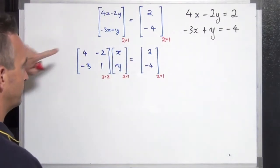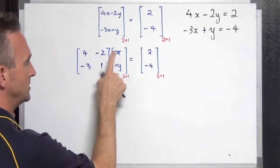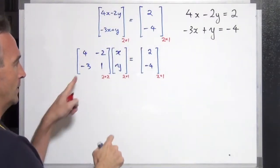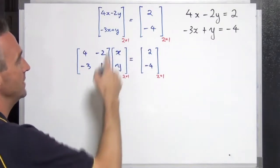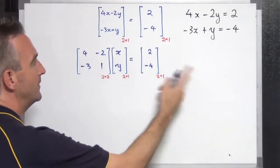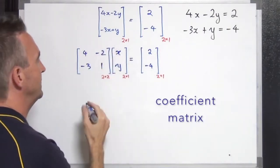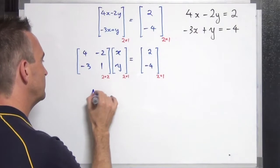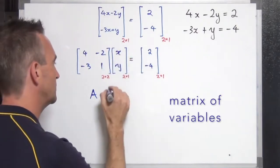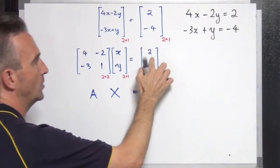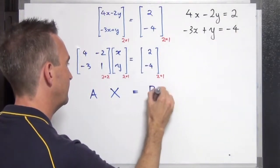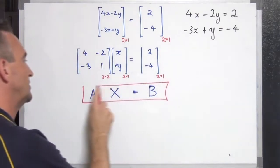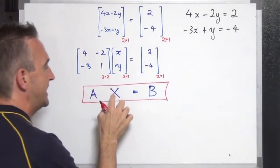Let me explain this matrix multiplication. This times this: 4x minus 2y gives 4x minus 2y. And the bottom row: negative 3 times x, plus 1 times y, gives negative 3x plus y. This is called the coefficient matrix — the coefficients of the variables in the original equation. We call that matrix A. This is the matrix of variables, called matrix X. And this is the matrix of constants, called matrix B.